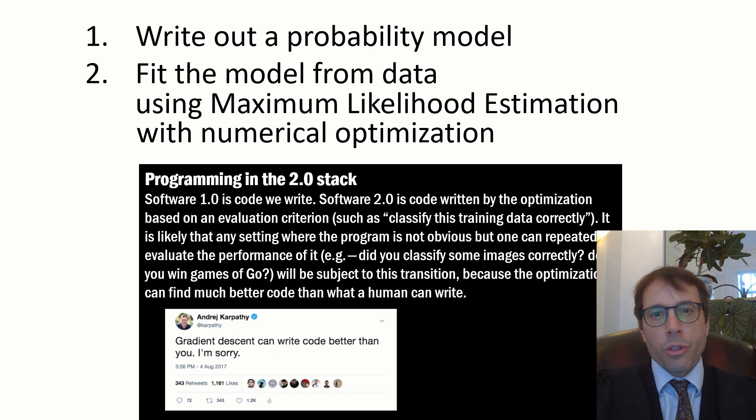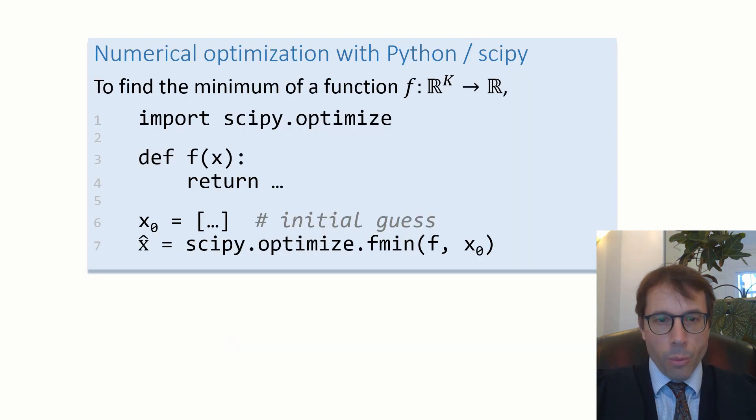This is how we optimize: define the function, import scipy.optimize, make an initial guess, and then simply call scipy.optimize.fmin.